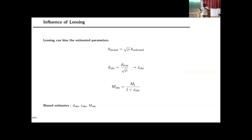When lensed gravitational waves arrive, the strain is modified — it equals root-mu times the unlensed version, where root-mu is the magnification factor. Because of this, the amplitude appears louder, and our distance measurements become biased: the measured distance will be the true distance divided by root-mu. Even mass measurements get biased. So overall, a lensed gravitational wave will yield biased estimates of its distance, redshift, and mass.